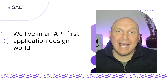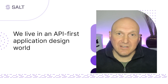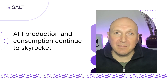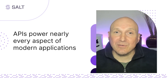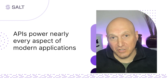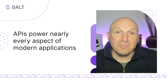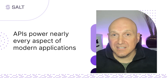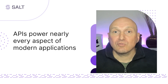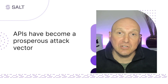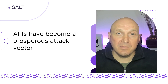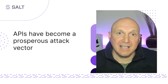We now live in an API-first application design world. As a result, API production and consumption continue to skyrocket. APIs have become the backbone to today's digital economy. They power nearly every aspect of modern applications that both businesses and consumers rely on daily. That's the good. The bad? Whether it be to exfiltrate data, take control of critical systems, or disrupt key business services or digital supply chains, threat actors have taken notice and view APIs as a new prosperous and ripe attack vector. It's no surprise that API risk is top of mind to many security professionals and executives today.